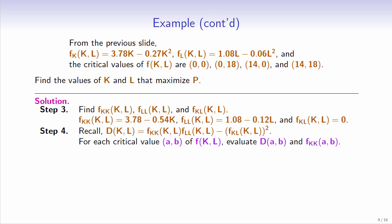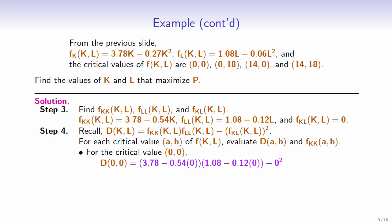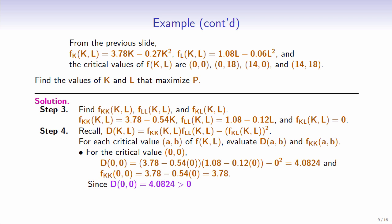Evaluate d and fkk at each critical value. For the critical value (0,0), d equals (3.78 minus 0.54 times 0) times (1.08 minus 0.12 times 0) minus 0 squared, which equals 4.0824. fkk equals 3.78 minus 0.54 times 0, which equals 3.78. Since 4.0824 is positive and 3.78 is positive, f has a relative minimum at (0,0).